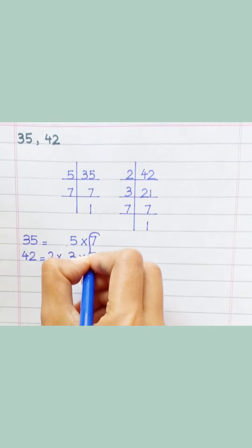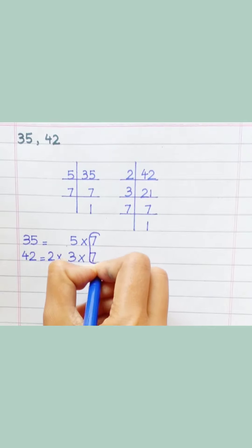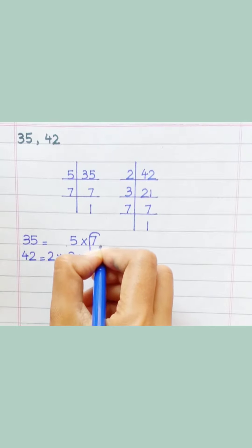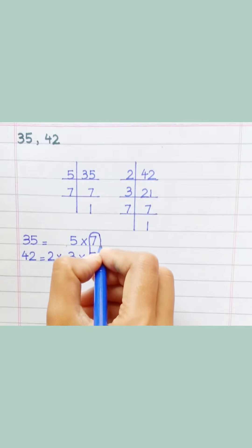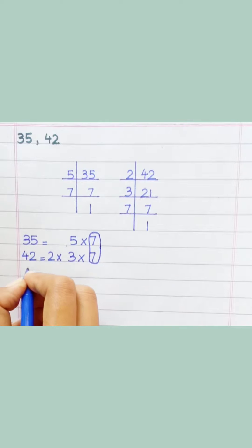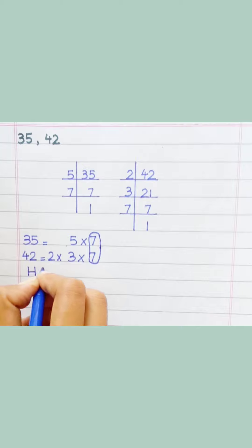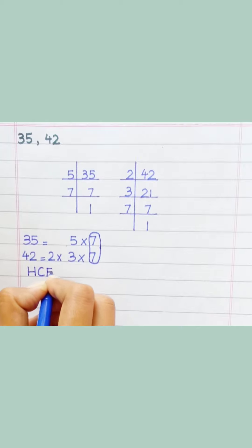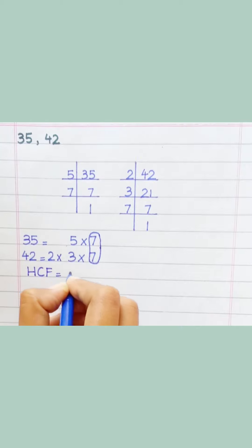Loop the common prime factor among both numbers. HCF equals 7. The answer is 7, confirmed from 42.